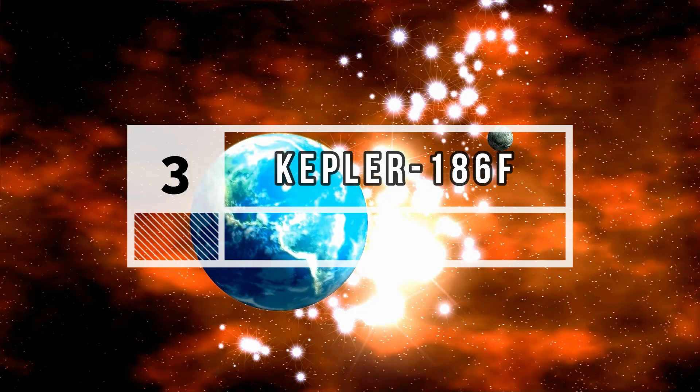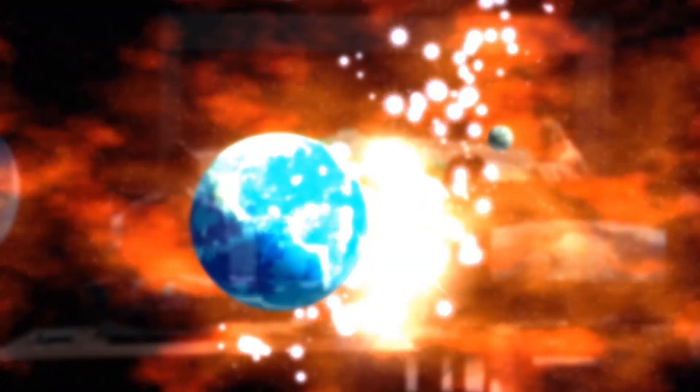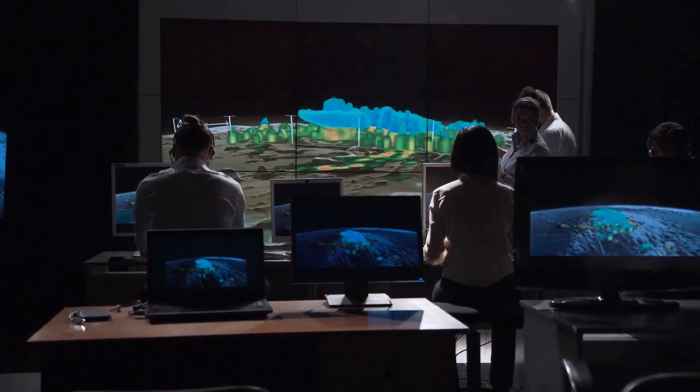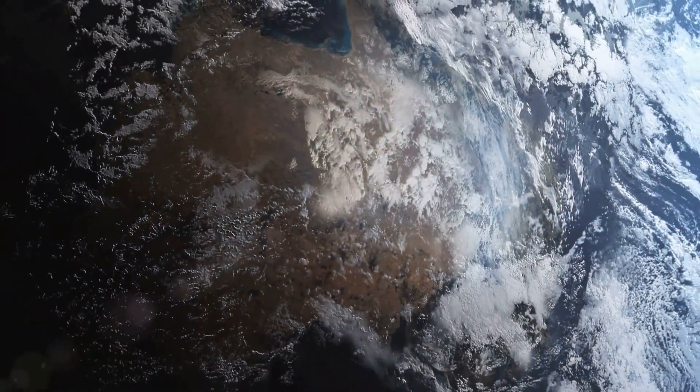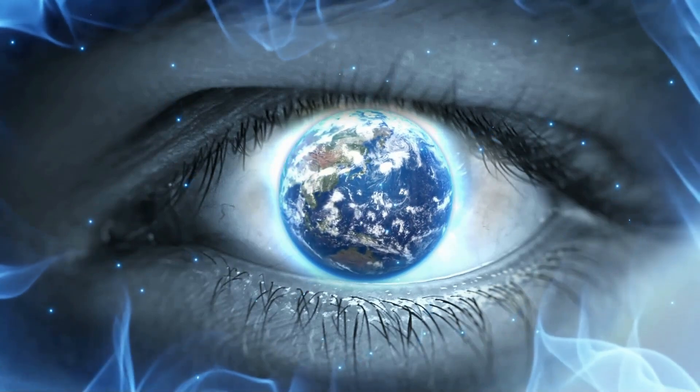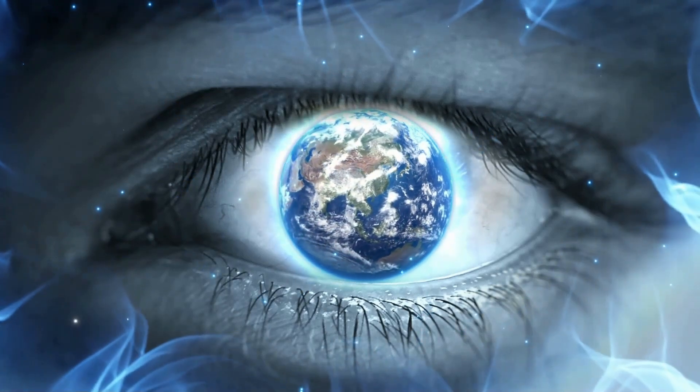Number 3: Kepler-186f. Discovered in 2010, it was the first exoplanet thought to sustain life. Because of its similarities with Earth, it is also known as the Earth's cousin. It is about 10 times larger than the Earth, and orbits around a dim red dwarf star.